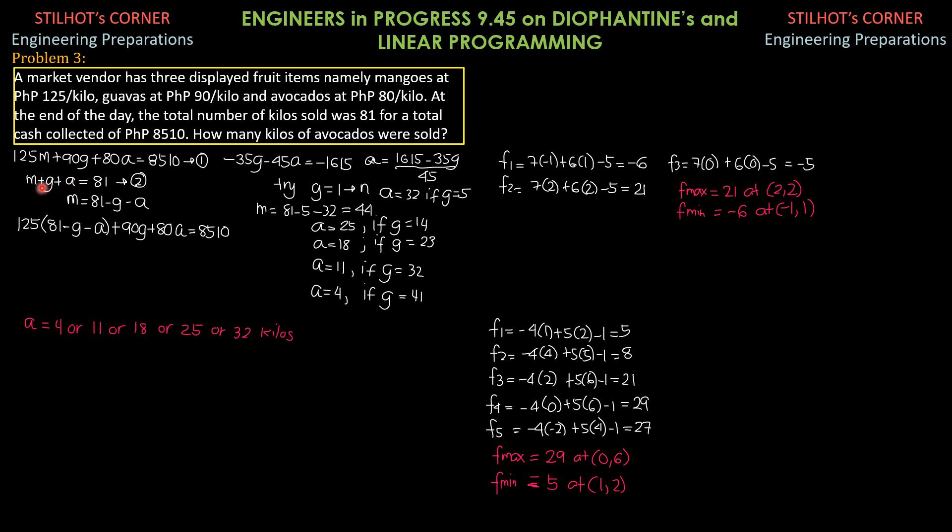For the first equation about the sales, 125 for mangoes plus 90 per kilo times number of kilos sold, guavas, then 80 pesos per kilo for avocados equals 8,510. Then, equation 2. Number of kilos, mangoes plus guavas plus avocado equals 81. So, M equals 81 minus G minus A. We substitute this into equation 1.